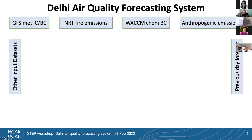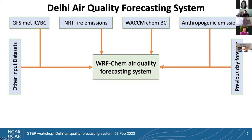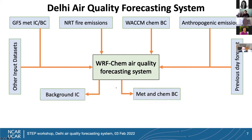Every day we get GFS meteorological initial and boundary conditions — in the first phase from the NOAA website, but now replaced with the IITM GFS meteorological forecast. We also get near-real-time fire emissions, NCAR WRF-Chem output for chemical boundary conditions, pre-prepared anthropogenic emissions, and several other datasets. A previous-day forecast is needed to initialize the chemical state of the model. All this information goes into the WRF-CAM-based air quality forecasting system to produce background initial conditions as well as meteorological and chemical boundary conditions.